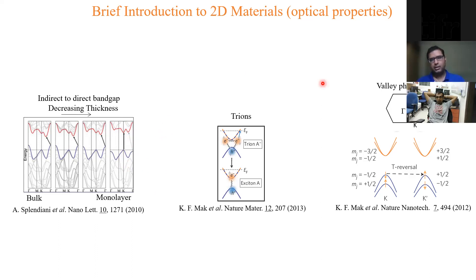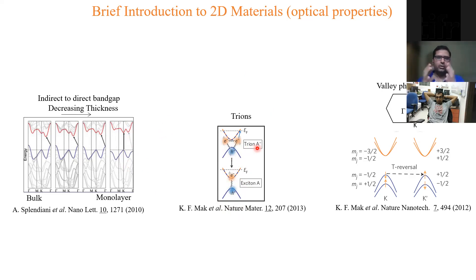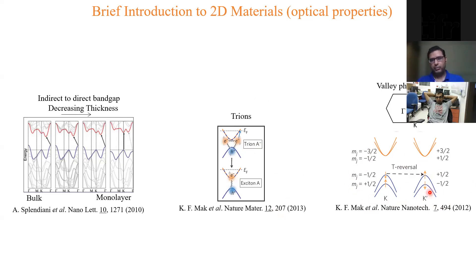Because of their two-dimensional nature and reduced screening effects, the excitons or electron-hole pairs in these materials have large binding energy with very strong Coulomb interaction. Not only a single electron and hole but also two electrons and one hole, or one electron and two holes, can be bound together. Their signatures can be seen in a typical photoluminescence spectrum at low temperatures.